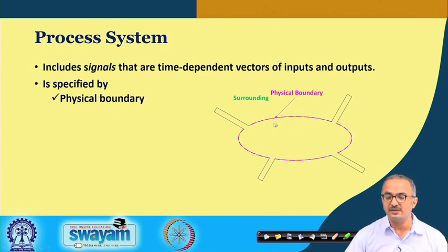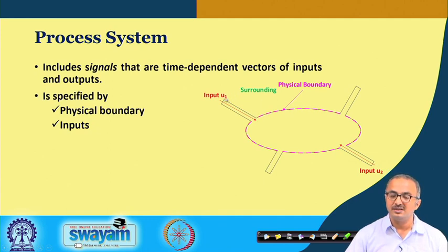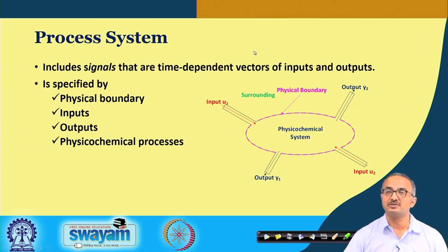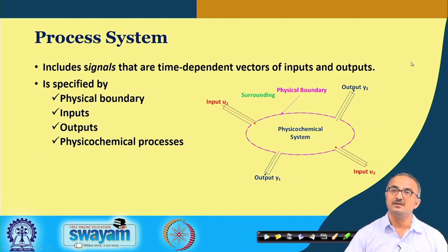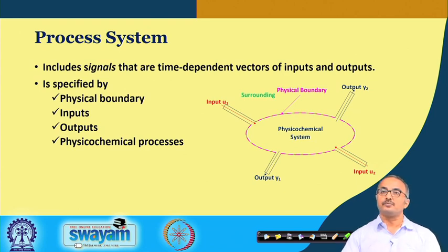To characterize or designate a system we need a few things. First is the physical boundary — as soon as we demarcate a boundary, the surroundings come automatically. Within this boundary we have the system; outside this boundary we have the surroundings. Next, we have inputs — there can be more than one input port, such as U1 and U2 as shown in the figure. We have outputs Y1 and Y2, and lastly some process taking place within the system boundary. All these things need to be specified to identify a particular system.